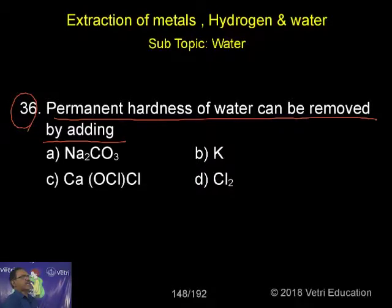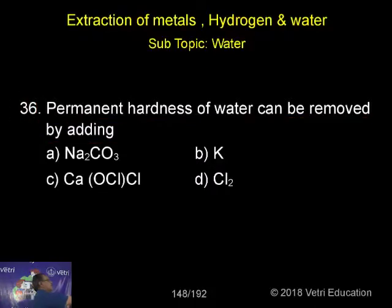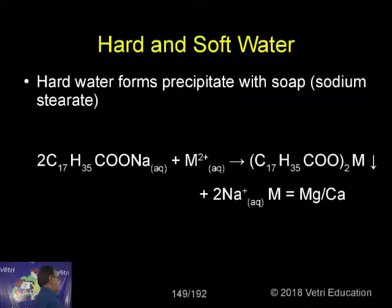We cannot drink permanent hardness water. So how can it be removed? By adding sodium carbonate, calcium hypochlorite, and chlorine. Let me explain now.